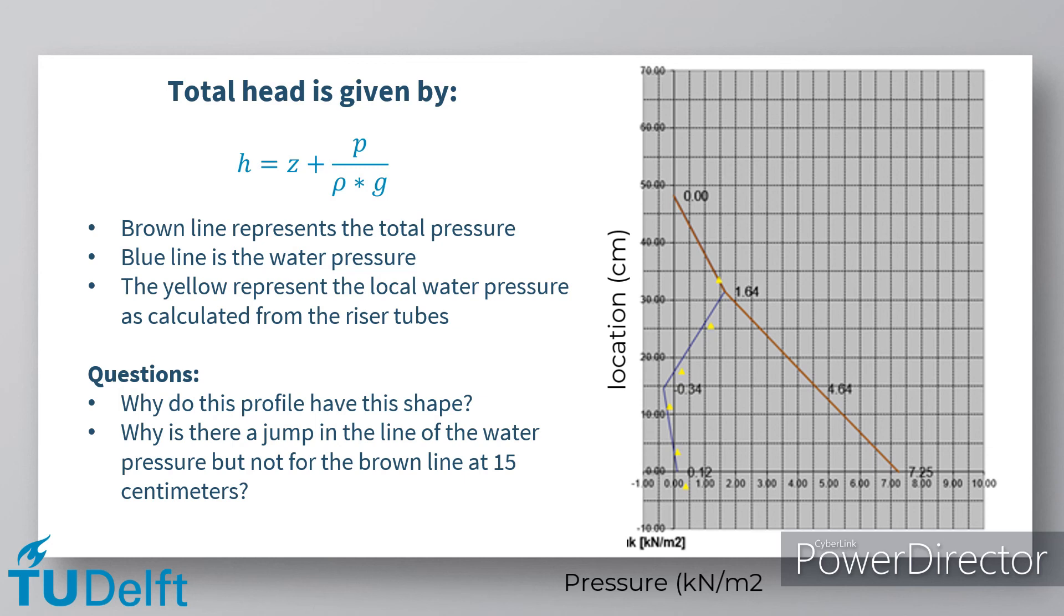Questions that the students should be able to answer include why the profile has this shape. Why do you think that there is a jump in the blue water pressure line, but not in the brown line?